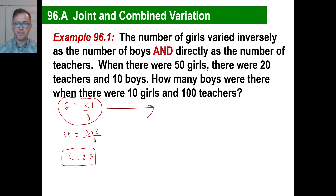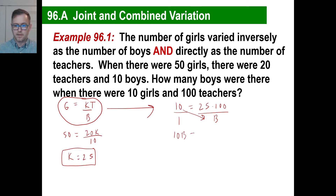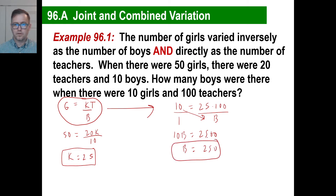So let's go ahead and do this. How many boys were there when there were 10 girls and 100 teachers? We're looking for boys. We have 10 girls, g equals k times t over b. We know k is 25, and there are 100 teachers. So 10 times b equals 2,500, and we divide by 10, getting 250. That is a combination of direct and inverse variation.